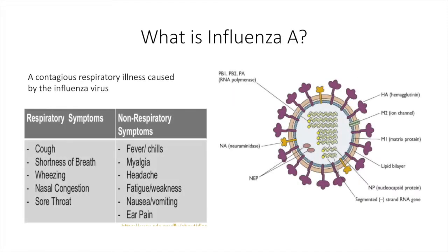Influenza A can have some serious complications, including pneumonia, dehydration, febrile seizures, inflammation of the central nervous system, and cardiac complications. Some respiratory symptoms include cough, shortness of breath, wheezing, nasal congestion, and sore throat. There are three types of influenza, with type A having the most moderate to severe symptoms. This type is subdivided based on antigenic differences and affects both humans and animals.